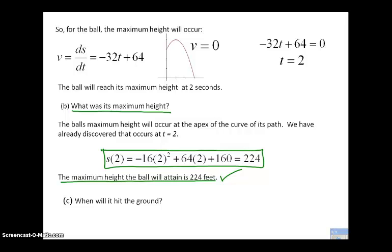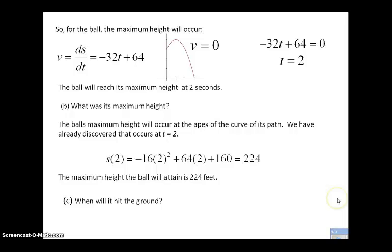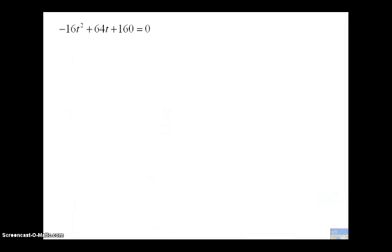When will it hit the ground? Any object is going to hit the ground when its position is zero. It's asking a when question, so it wants to know at what time will it hit the ground. All I need to do is go back and pick up my position function, set it equal to zero and find the t value. Here's some algebra involved. It is a quadratic equation. I have used the quadratic formula. I'm going to come out with two answers.